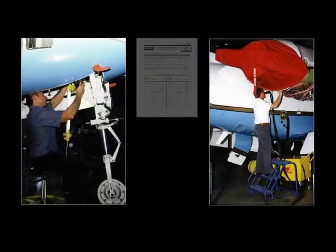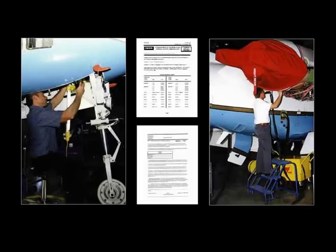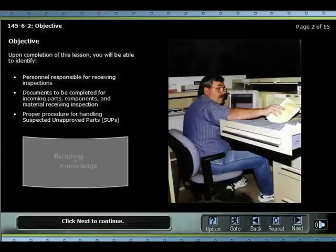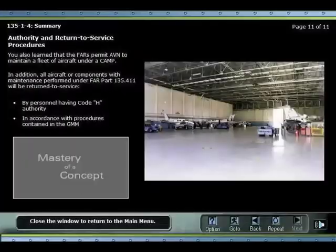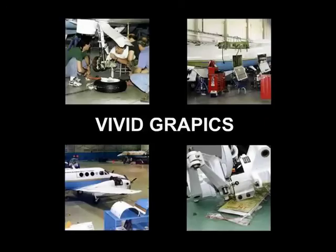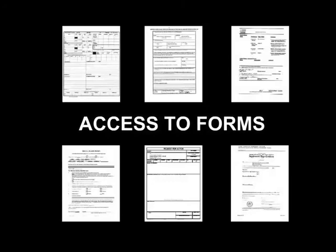The FAA-135/145 web-based training provides aircraft mechanics the necessary training to apply training manuals to aircraft maintenance procedures. It is designed to allow trainees to take the training at their own pace, starting with basic introductory material and building upon that when the trainee has displayed mastery of a concept. The course contains vivid graphics designed to grab the trainee's attention, provides access to important forms, and employs multiple embedded questions designed to measure mastery of the concepts presented.